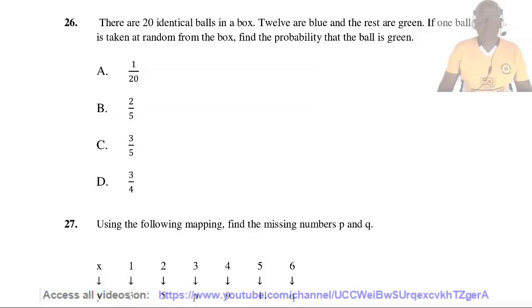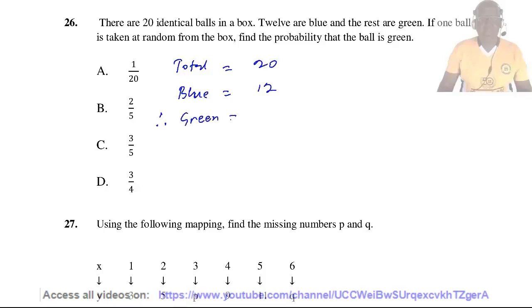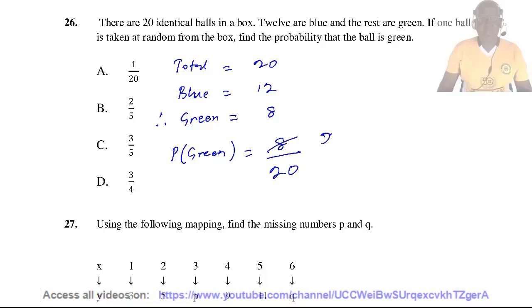Question 26. There are 20 identical balls in a box; 12 of them are blue and the rest are green. If one ball is taken at random from the box, find the probability that the ball is green. Total balls equals 20, blue equals 12, so green equals 8. The probability of choosing a green ball is 8 divided by 20, which simplifies to 2/5. The answer is B.